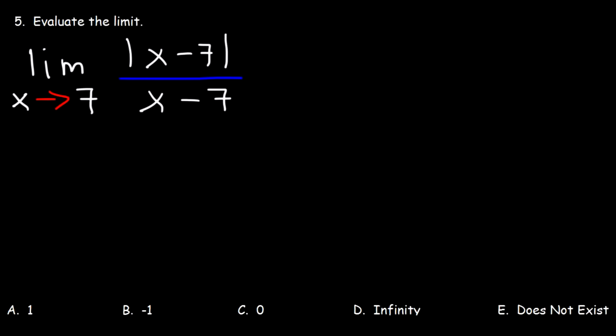Number 5, evaluate the limit. So we can't plug in 7. If we plug in 7, it's going to be 0 over 0, which is indeterminate. And we don't know if that's equal to 0, infinity, doesn't exist, or 1 or negative 1. So we need to check the left side and the right side of the limit.